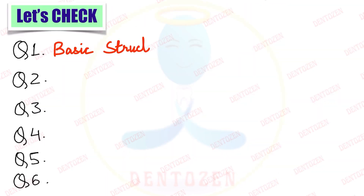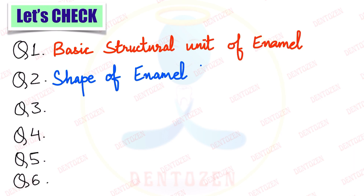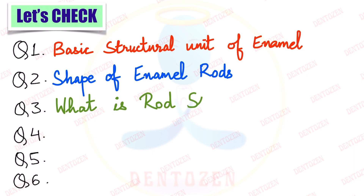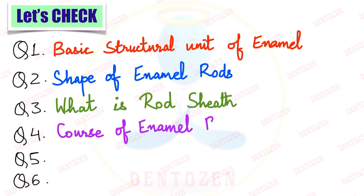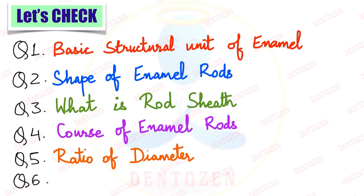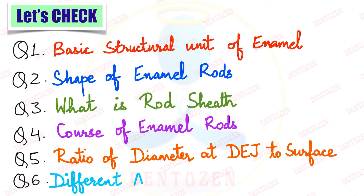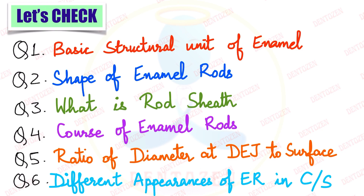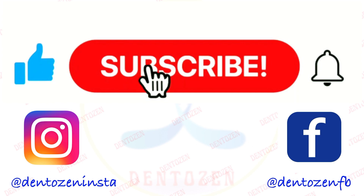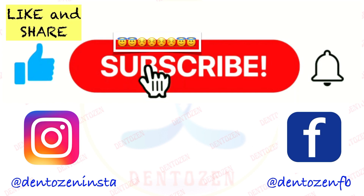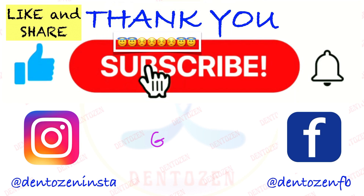Let's check what you have learned: What is the basic structural unit of enamel called? What is the shape of enamel rods? What is rod sheath? What is the course of enamel rods? What is the ratio of diameter of enamel rods from the dentino-enamel junction to the surface? What are the different appearances of enamel rods in cross section? Do tap the like button if you enjoyed the video, share it with your friends, keep smiling, keep learning, and good luck for your exams. See you in the next video — take care, bye bye.